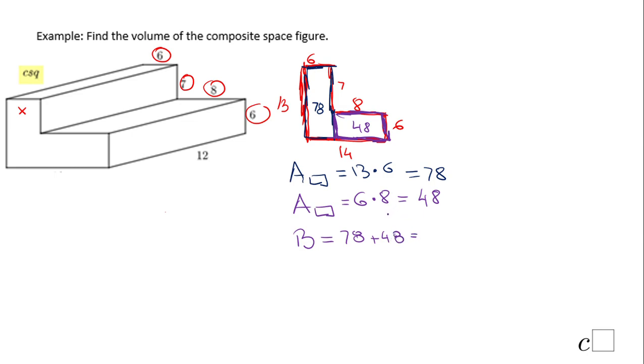That will be 126 square units. Then we can find the volume by using this formula. The volume is area of the base times the height. The base, like I said, is 126. Be careful, this height for this horizontal prism is this 12.